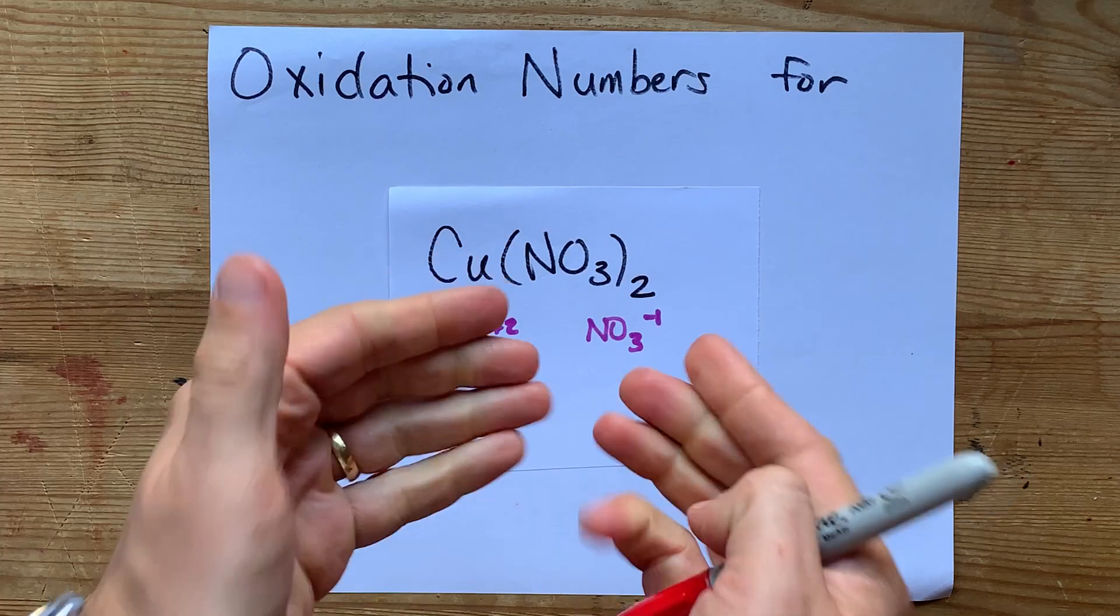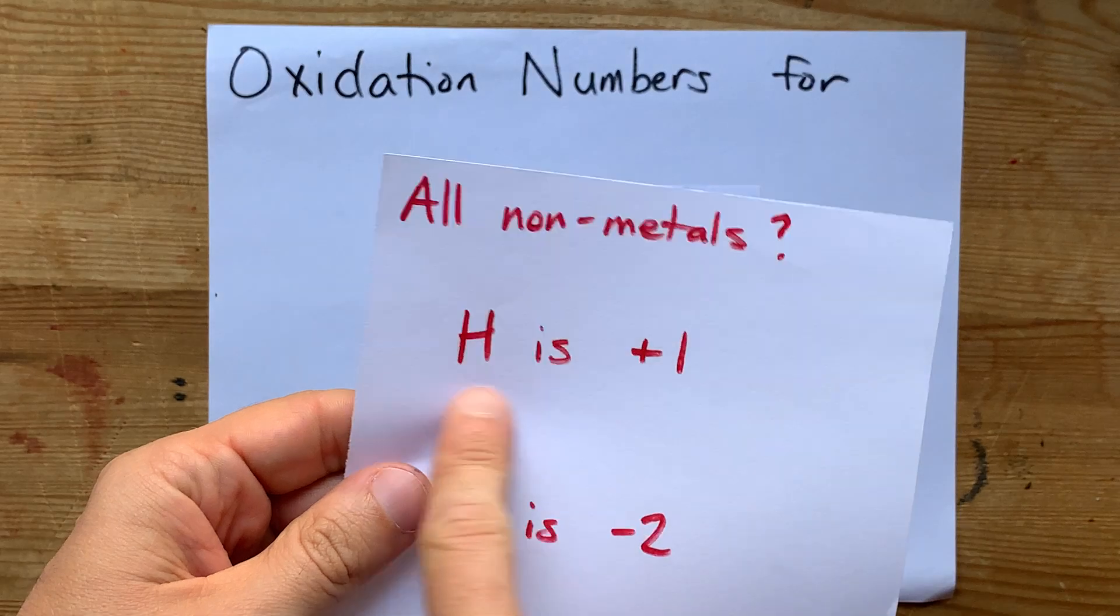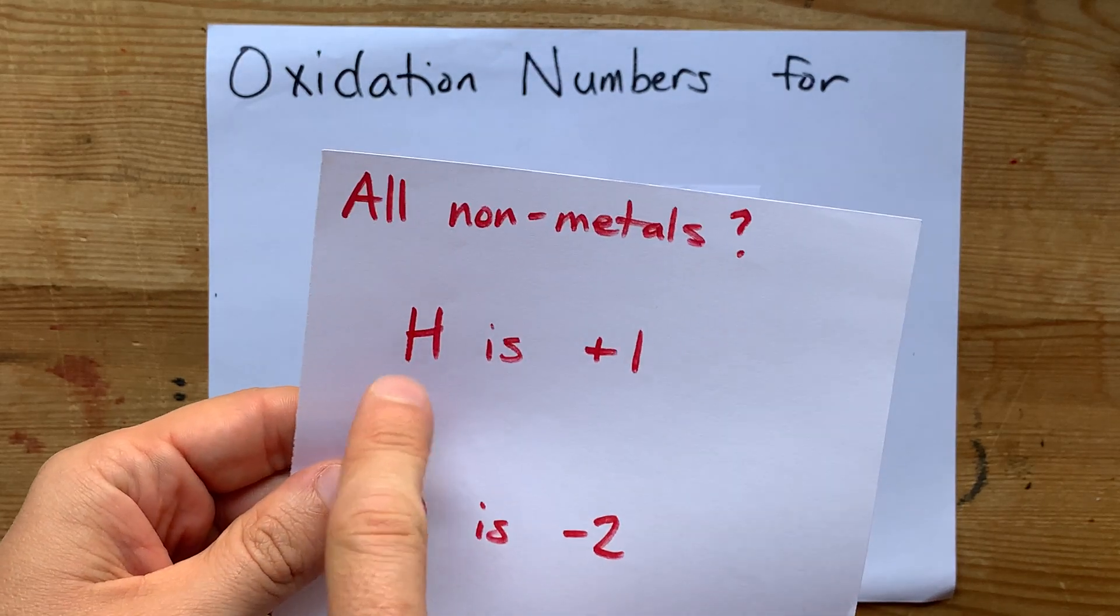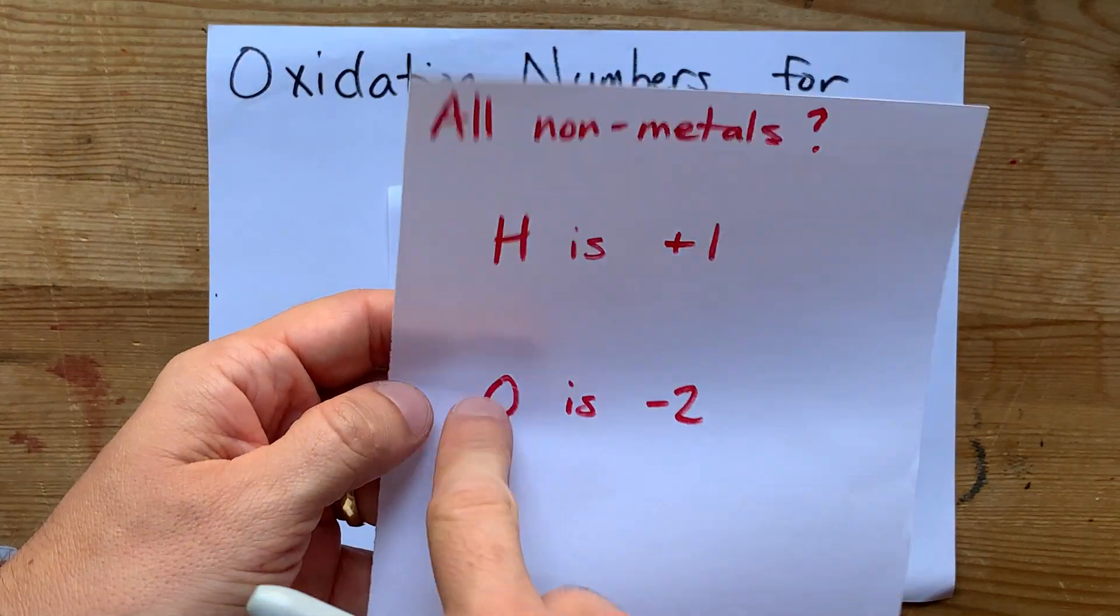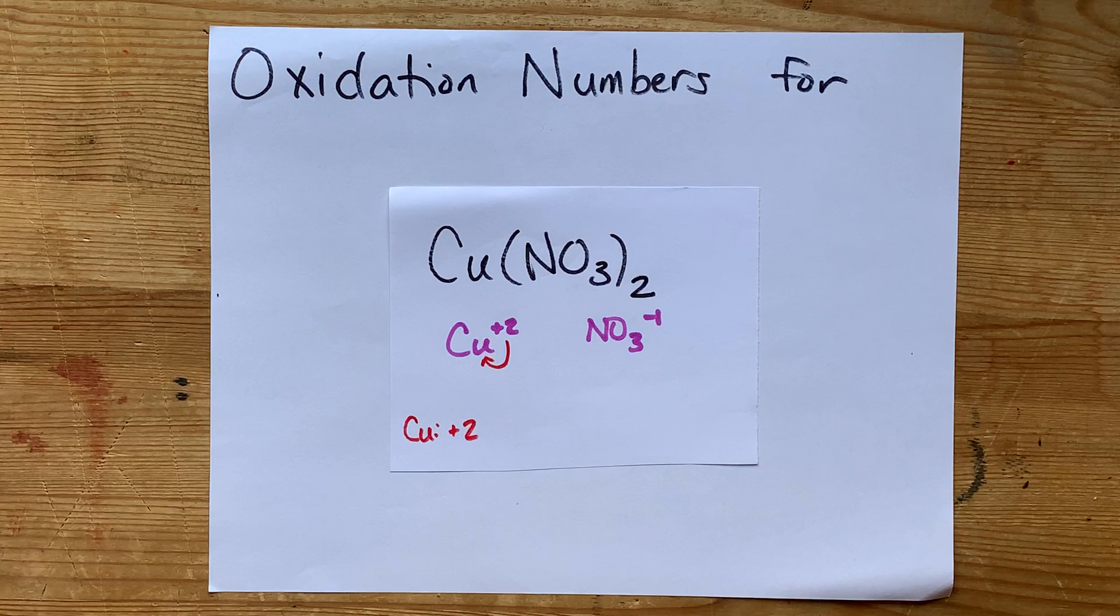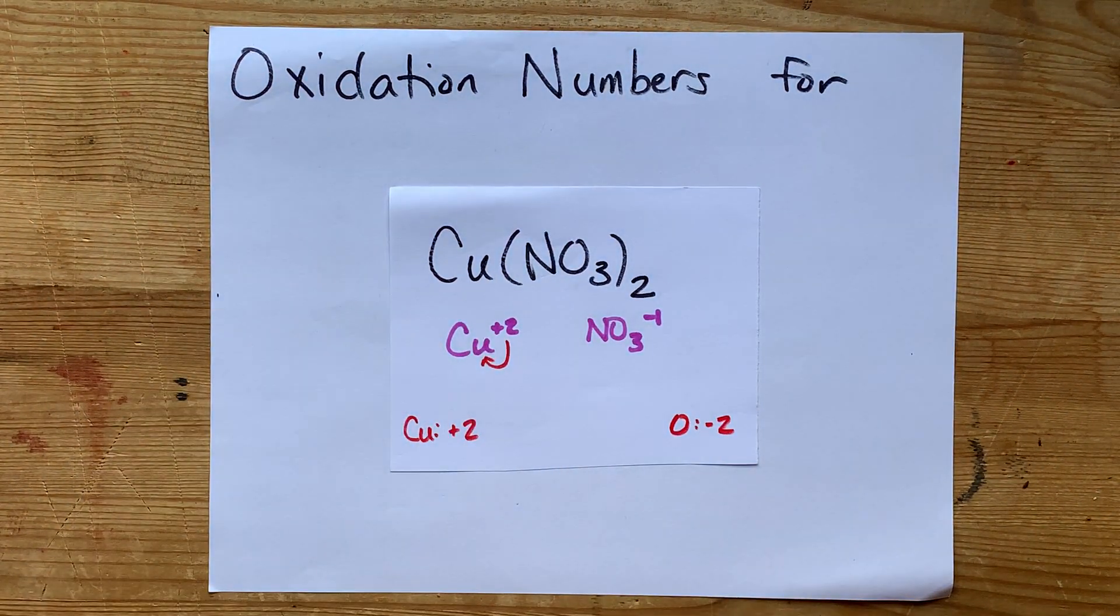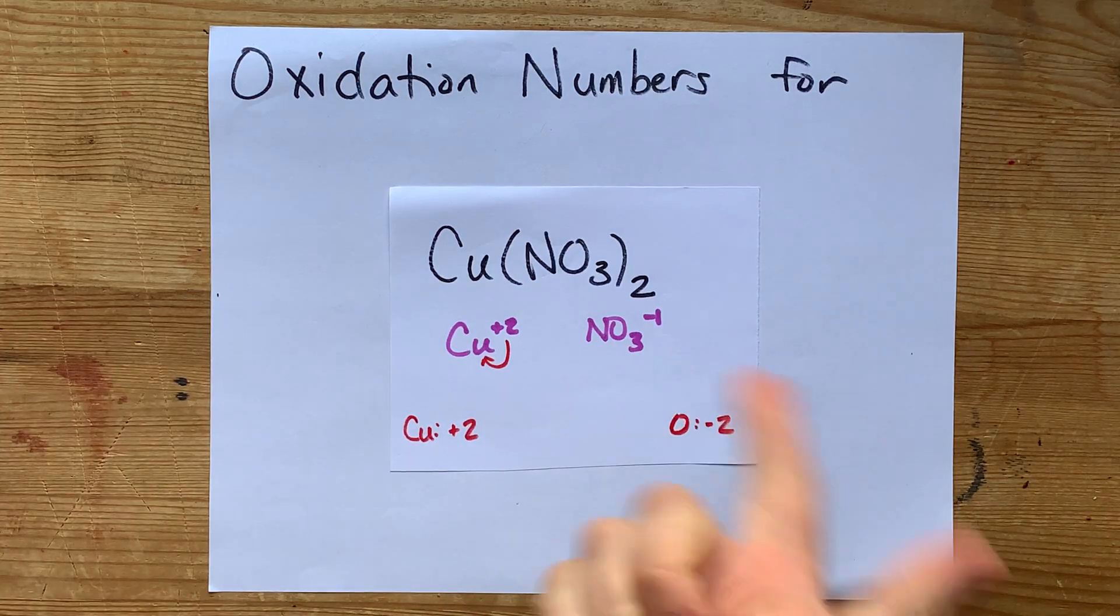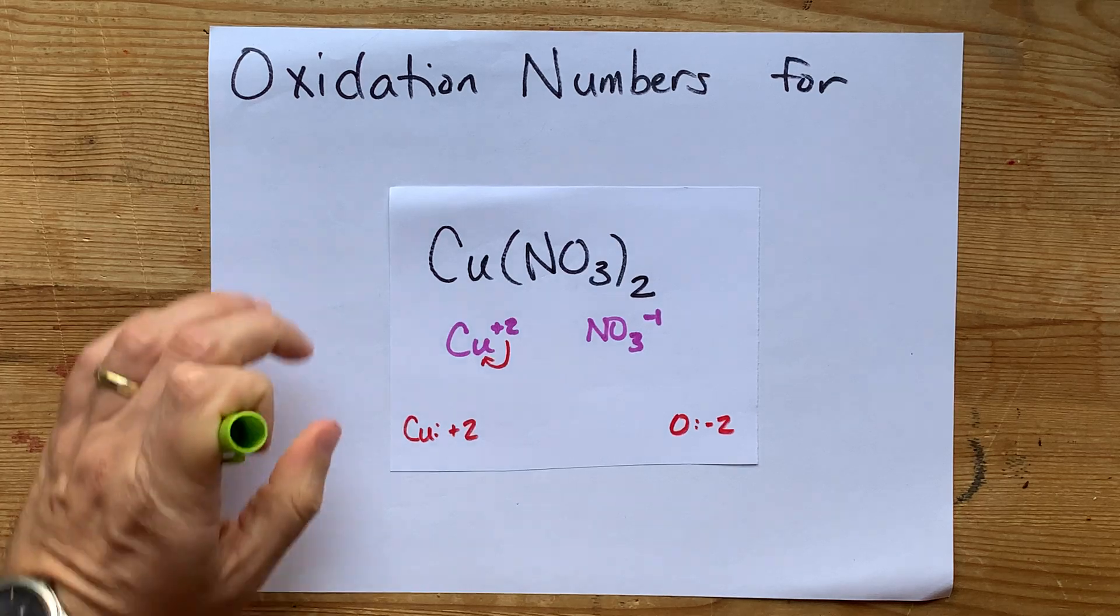These are all non-metals, so my order of precedence for rules in oxidation numbers, if they're all non-metals, is that hydrogen likes to be plus 1. It doesn't apply here. Oxygen likes to be minus 2. So that means that the oxygen here has an oxidation number of minus 2, and we're going to do a little bit of math to figure out what nitrogen's oxidation number is.